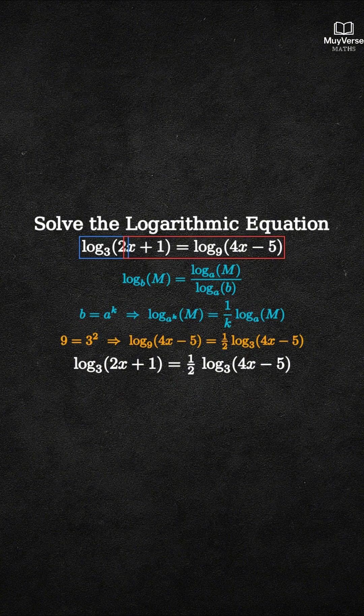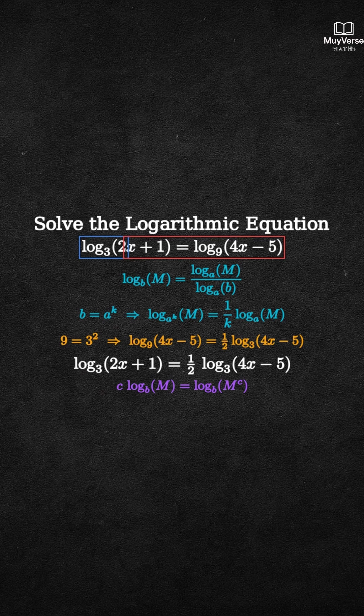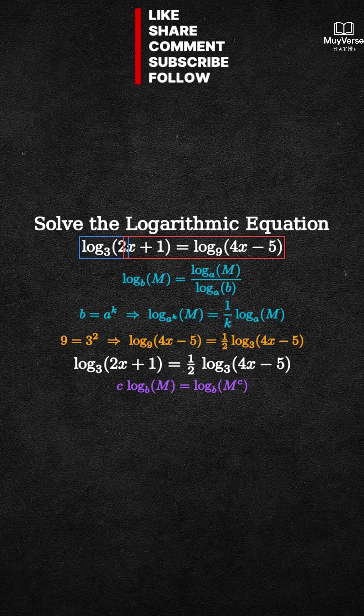Step 2: Use the power rule of logarithms — c times log base b of m equals log base b of m to the c. So, one half times log base 3 of (4x minus 5) becomes log base 3 of (4x minus 5) to the one half — that is, the square root.